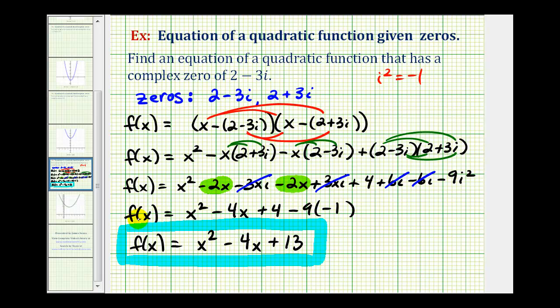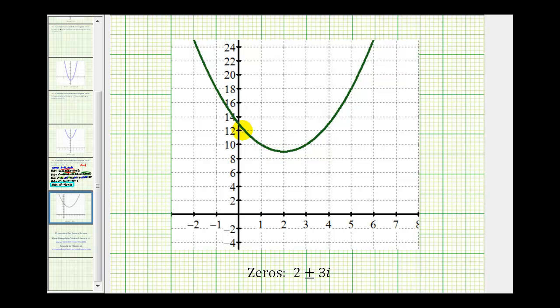And to finish, we'll go ahead and graph this function just to show, since the zeros are complex numbers, it will not intersect the x-axis. As I mentioned earlier, we'll take a look at the same problem again using a different method, which will require a lot less work by using the method of completing the square in reverse order. I hope you found this helpful.